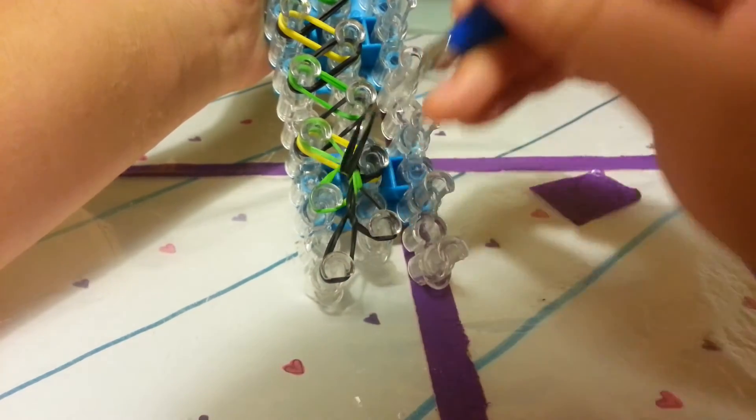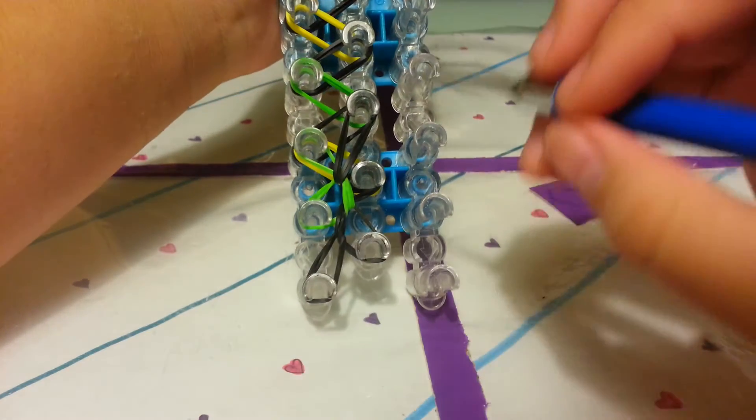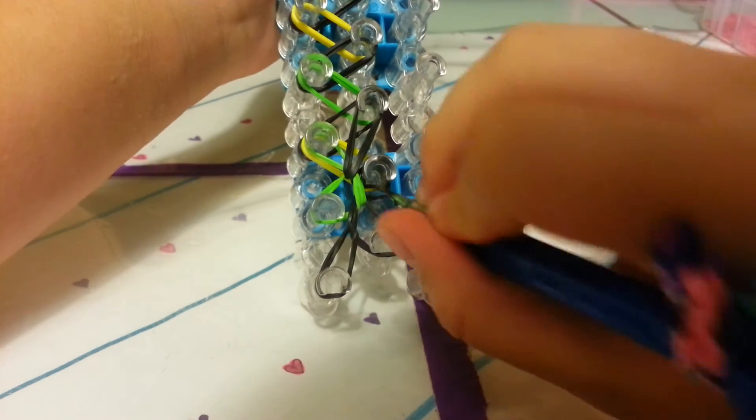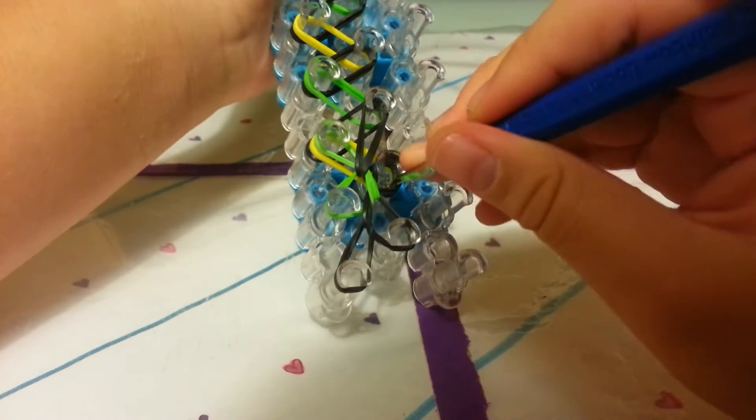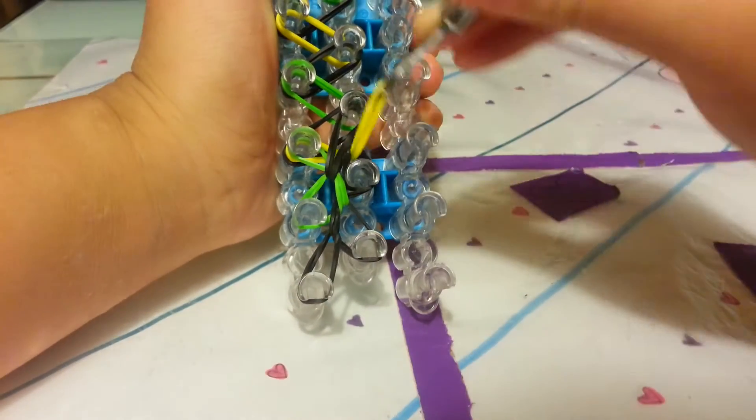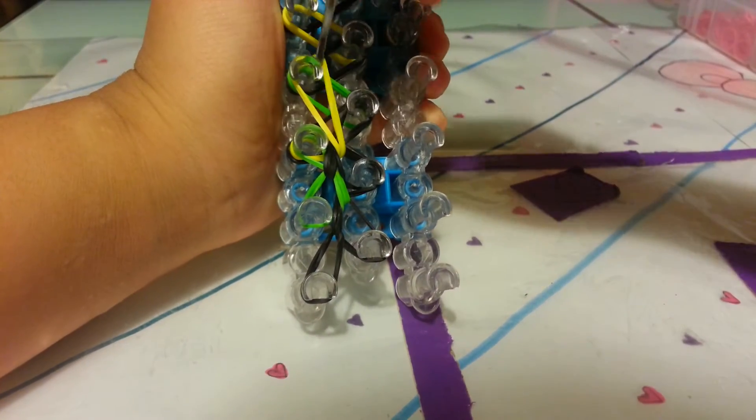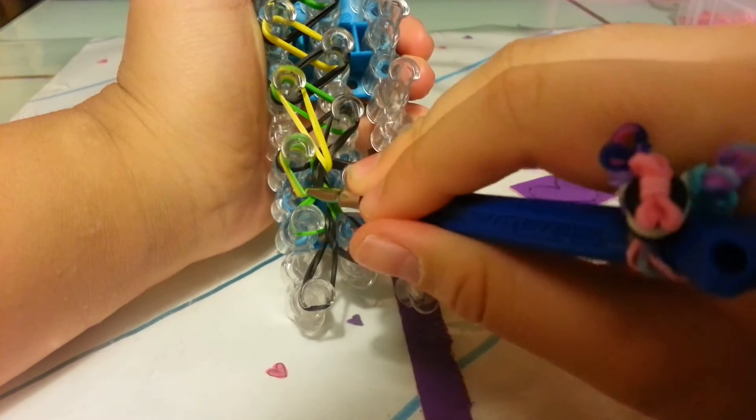Pull this band back, grab the bottom two bands, and stretch it that way. You want to keep on doing it until you reach the end of the loom. Pull all these bands back and loop this up here, two pegs up diagonally.